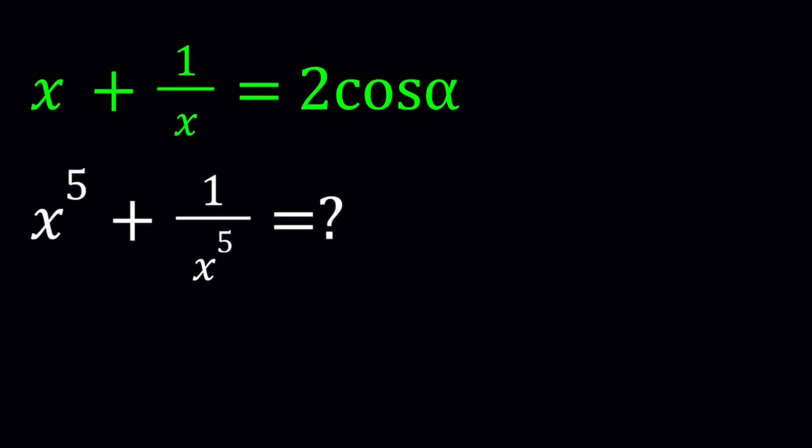Hello everyone. In this video, we're going to be solving an interesting problem. We have x plus 1 over x equals 2 cosine alpha, and we're supposed to evaluate x to the 5th plus 1 over x to the 5th.